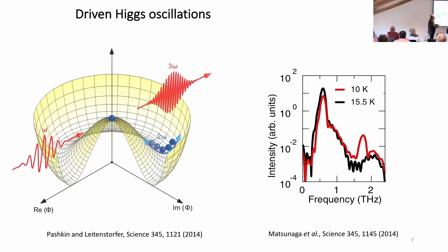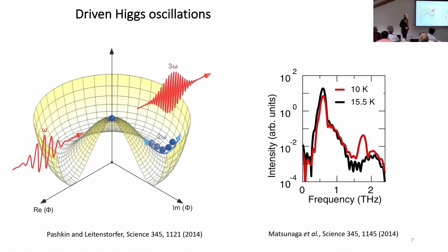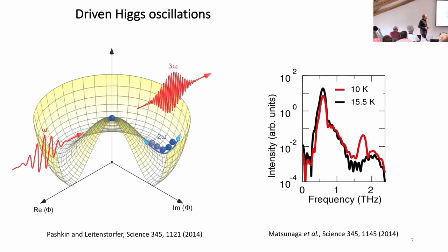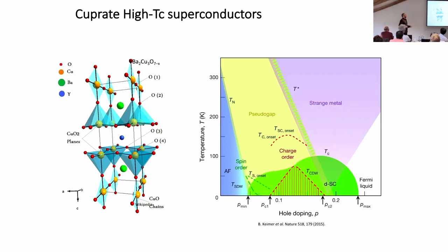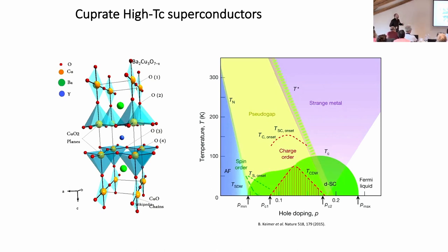I want to use these Higgs modes as a spectroscopic tool, particularly for high-Tc superconductors. These materials have complicated phase diagrams with many competing phases, and we don't know how phases interplay or compete. Usually people use excitation spectroscopies, but the idea here is to look directly at the order parameter dynamics. This would give us new insight into these systems beyond what conventional spectroscopy can provide.